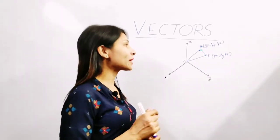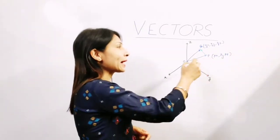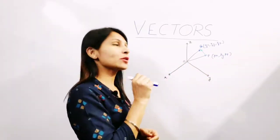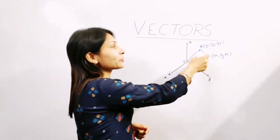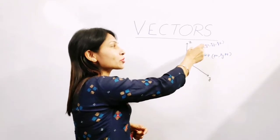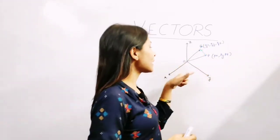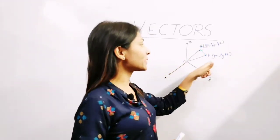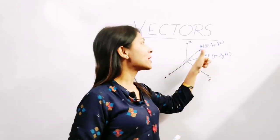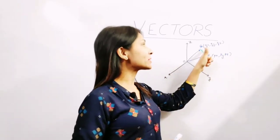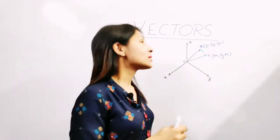Suppose we have an object which is at point P at a certain period of time. After a period of time, it comes to point Q. P coordinates are in our x, y, z plane: Px, Py, and Pz. Q coordinates we can give by Qx, Qy, and Qz.